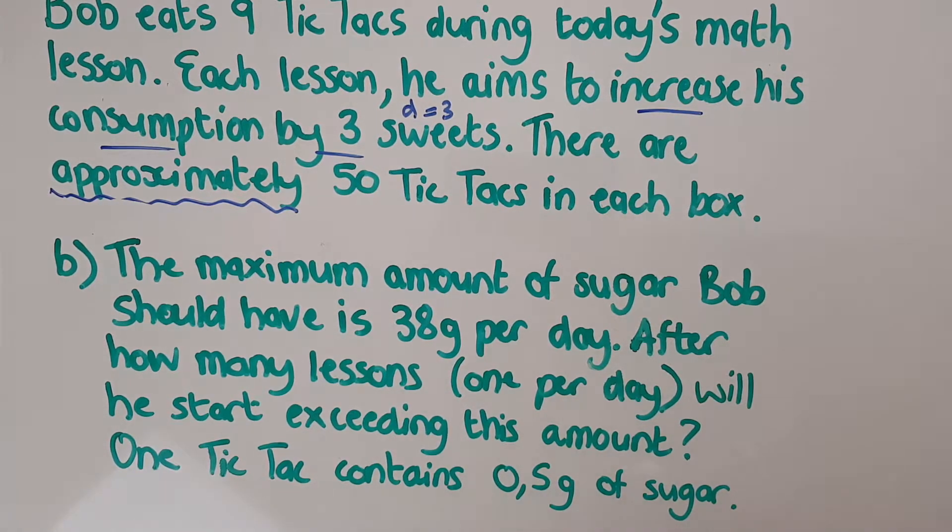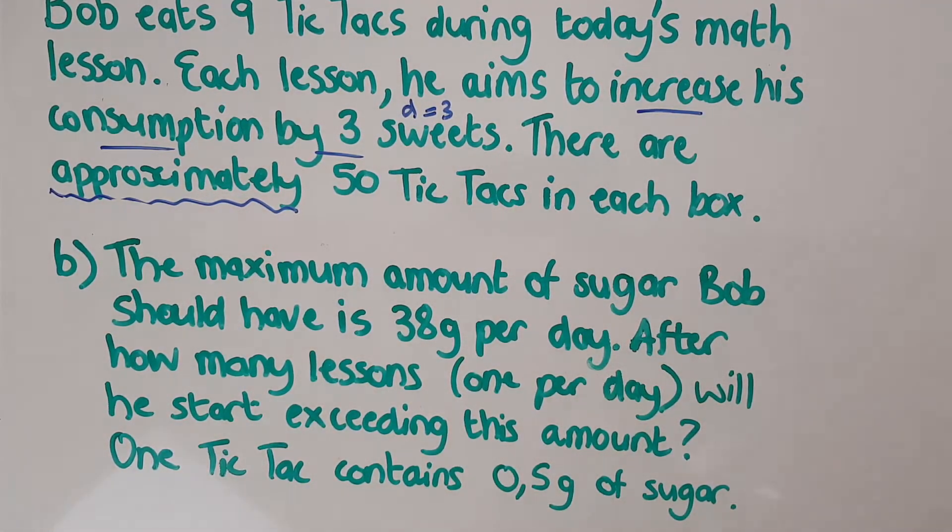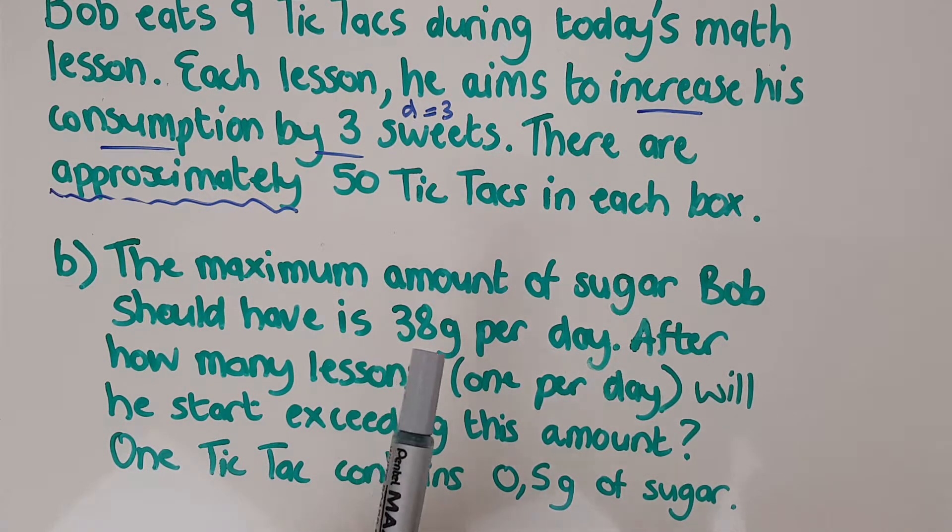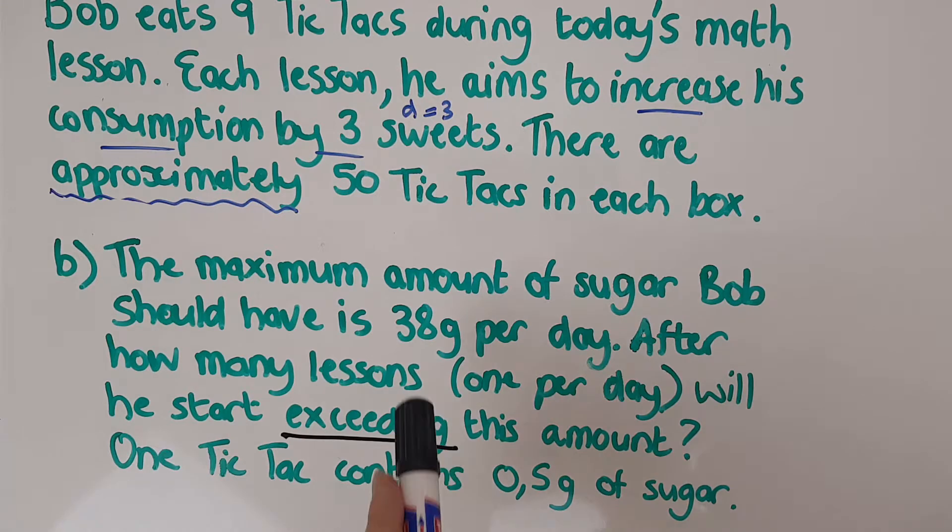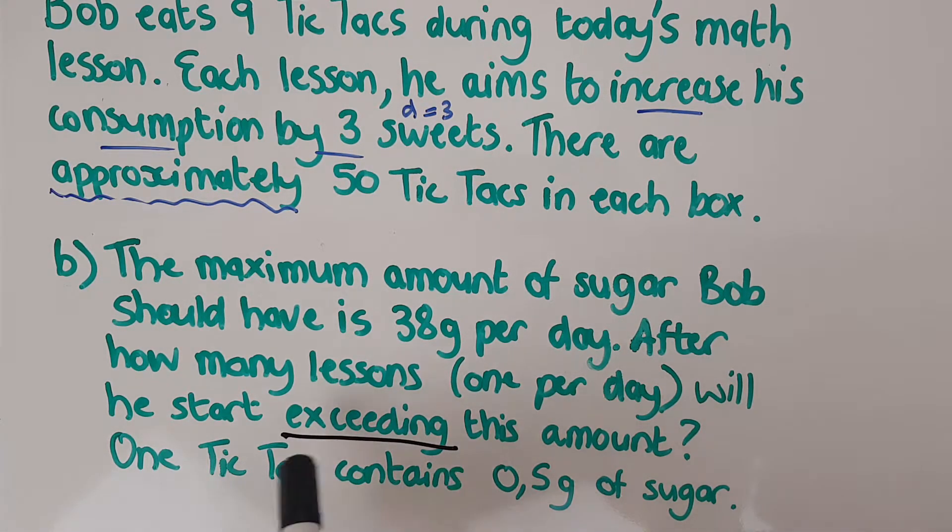The amount of sugar Bob should have is 38 grams per day. After how many lessons, if there's one per day, will he start exceeding this amount? One tic tac contains half a gram of sugar. So basically after how many lessons will he get to having 38 grams, more than 38 grams? Again, what's tricky about this question is this word exceed. Will he start exceeding? So basically he's going to have however many grams he has with nine. Then he's going to go up 12 tic tacs and it'll be six grams. And then what numbers are going to get to before it hits that 38 or more?